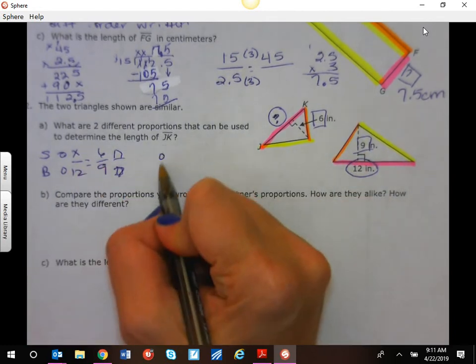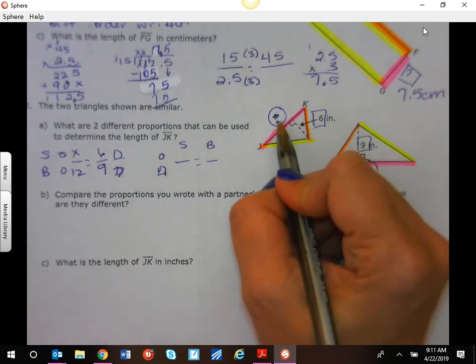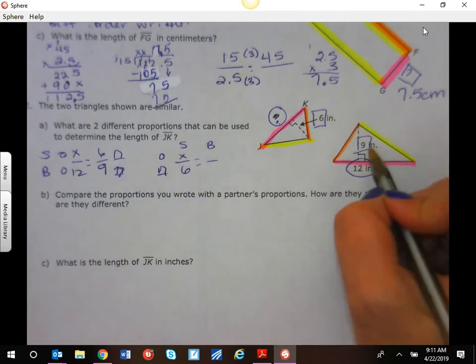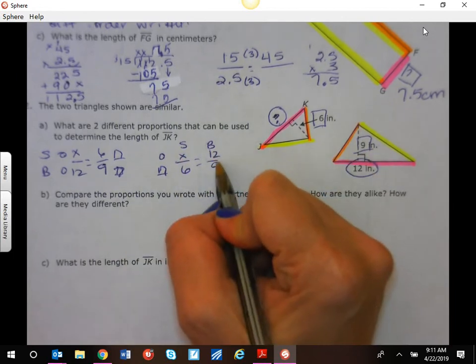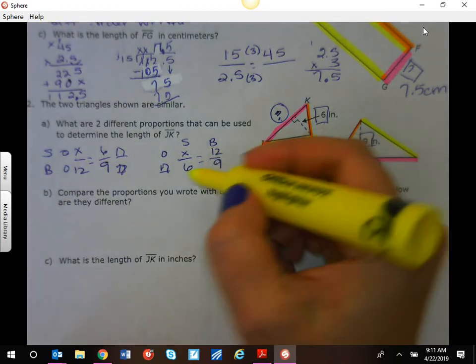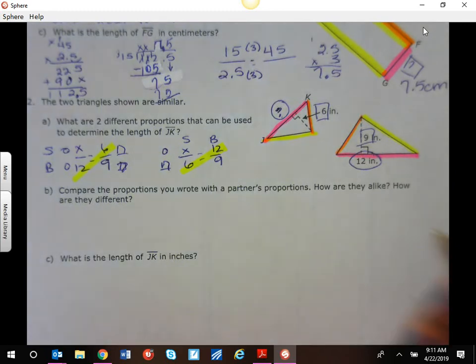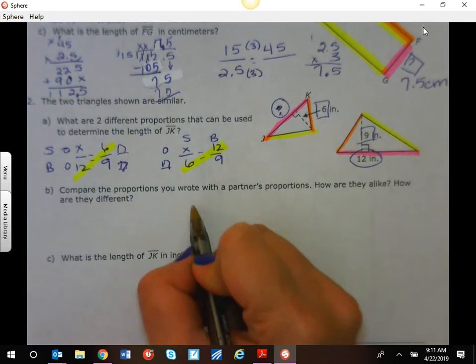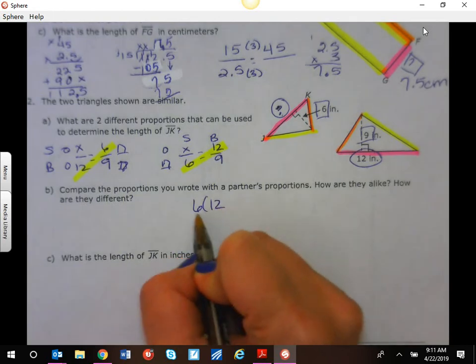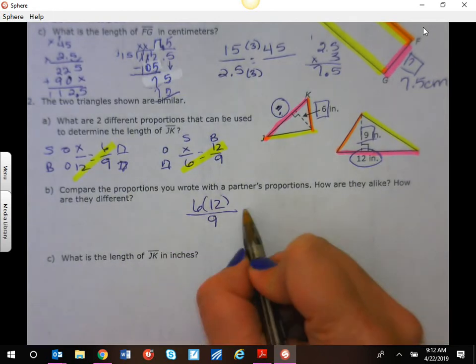Or we can do circles and squares where we have small and big going vertically. So something over 6 and 12 over 9. Remember, it doesn't matter because if you look, my cross-product is going to be the same. So we're still going to say 6 times 12 divided by 9 is going to give us our x.